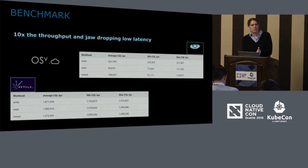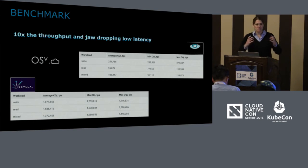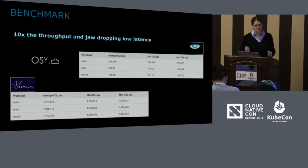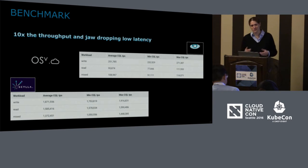Here's a performance benchmark example. OSv was a unikernel brought by a company called CloudIUS in Israel — they were all about unikernel performance until Docker came along. So they pivoted: they took Cassandra, rewrote it to run on unikernel, called it ScyllaDB, and got better performance. It's actually 10 times better — a huge boost in performance.